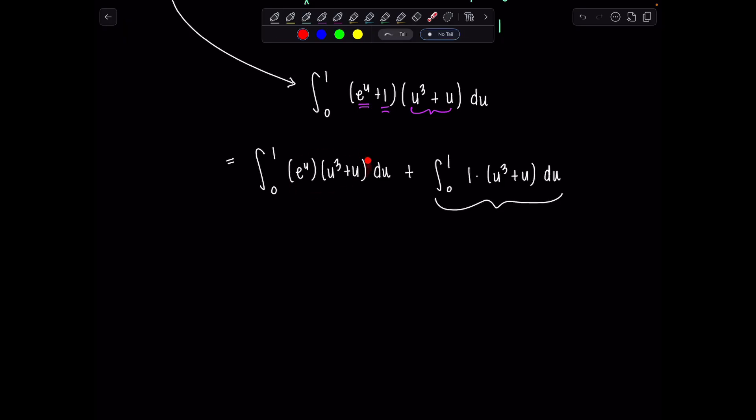This one here, we could do by parts, but it'll take multiple rounds because we have a third degree polynomial. So I prefer tabular or DI method in such a scenario. We'll differentiate the polynomial quantity u³ + u until we get zero and then integrate e^u the same number of times.